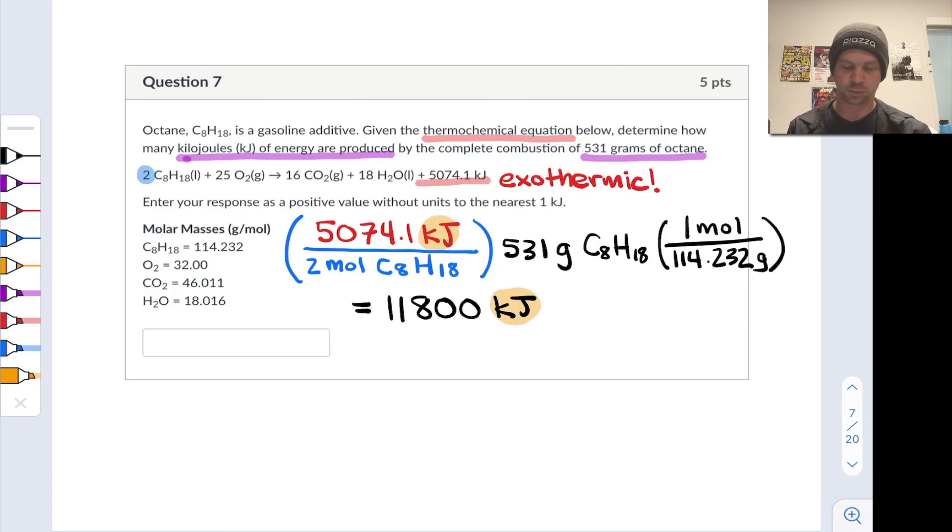Notice we were already in kilojoule world with the initial thermochemical equation, so no unit conversions are required here. Definitely useful to pay attention to those units, because this is a very large quantity of heat. You may be inclined to divide by a thousand, but that's not justified here because we started out in kilojoules. And notice we're combusting about five moles of octane, so it's no surprise that this is a very large number.